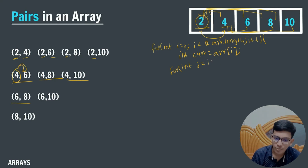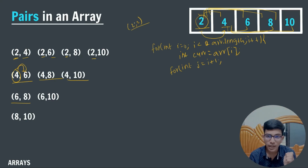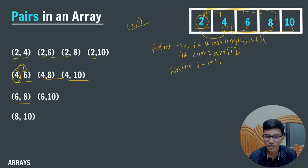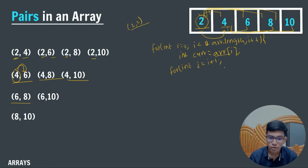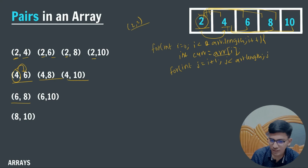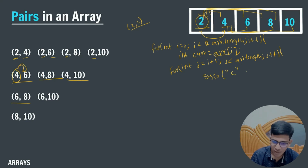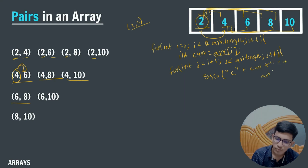For the inner loop: for(int j = i + 1; j < arr.length; j++). I start j from i+1 because I'm not pairing an element with itself — the pair elements should be different. Inside the inner loop I print: System.out.print('(' + current + ' ' + arr[j] + ')').